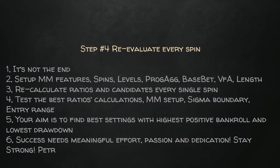It doesn't end there — I re-evaluate all of these calculations, including ratios, boundaries, and outliers, every single spin, because I want to know what's happening. Sometimes you may want to change numbers every single spin if that is your strategy. On top of that, I add money management features like spin levels, progression, aggressiveness, base bet variance — all of which you can check at roulette4living.com.